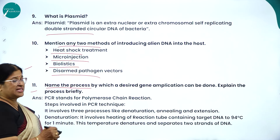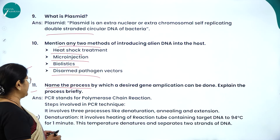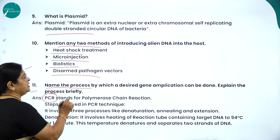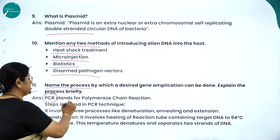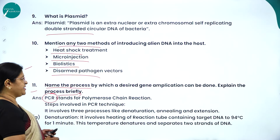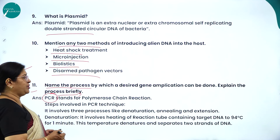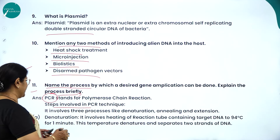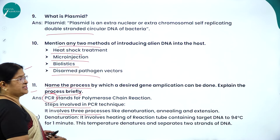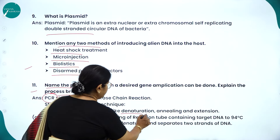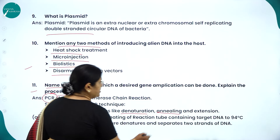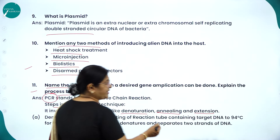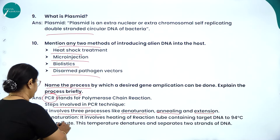The process by which a desired gene amplification can be done is polymerase chain reaction (PCR). PCR involves three steps: denaturation, annealing (also called renaturation), and extension (also called elongation).